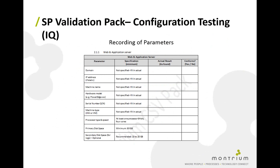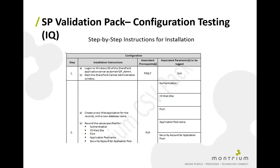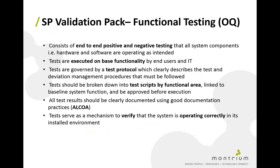This is an example of the standard IQ we provide as part of our qualification pack. We first record all machine parameters, then provide step-by-step installation instructions to deploy the SharePoint environment, and log various parameters as we create them. Once installation qualification is complete, we move into OQ — functional testing. Functional testing consists of end-to-end positive and negative testing, verifying that all system components — both hardware and software — are operating as intended.